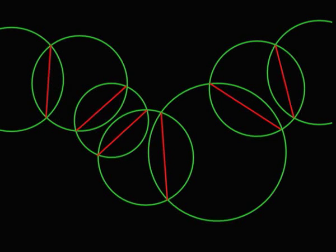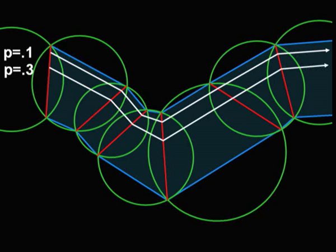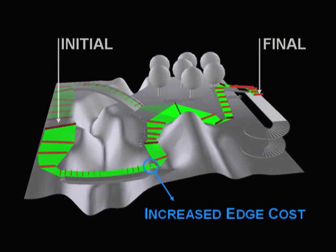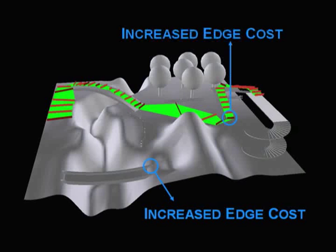Moving in corridors is done according to an individual parameter p, which allows computing a waypoint at each gate crossed. To increase solution variety, we search for several paths by iteratively modifying edge cost and searching for the shortest path.